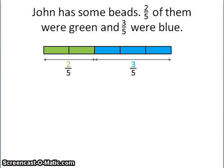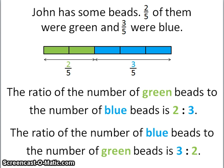Notice that the total number of beads is not given, nor is there any indication of what the two-fifths or the three-fifths stands for. So according to the model, I've indicated two parts to be green and three parts to be blue. This is how you write the ratio statement: the ratio of the number of green beads to the number of blue beads is 2 to 3. Notice that the numerator is used to represent the ratio. You can also write it the other way around: the ratio of the number of blue beads to the number of green beads is 3 to 2.